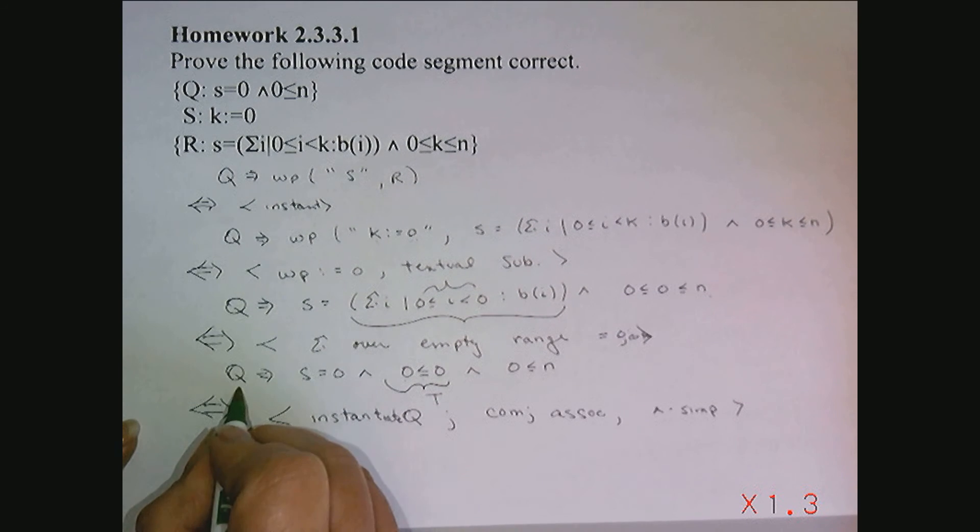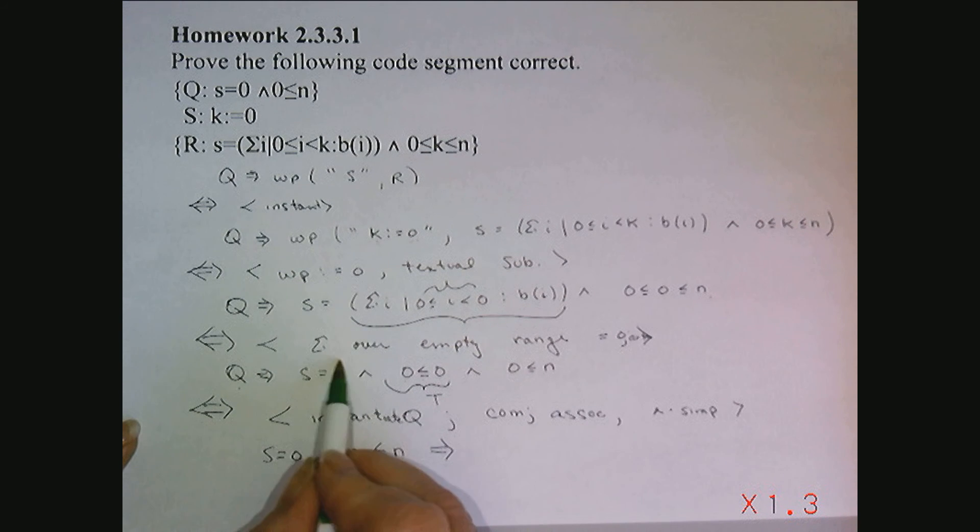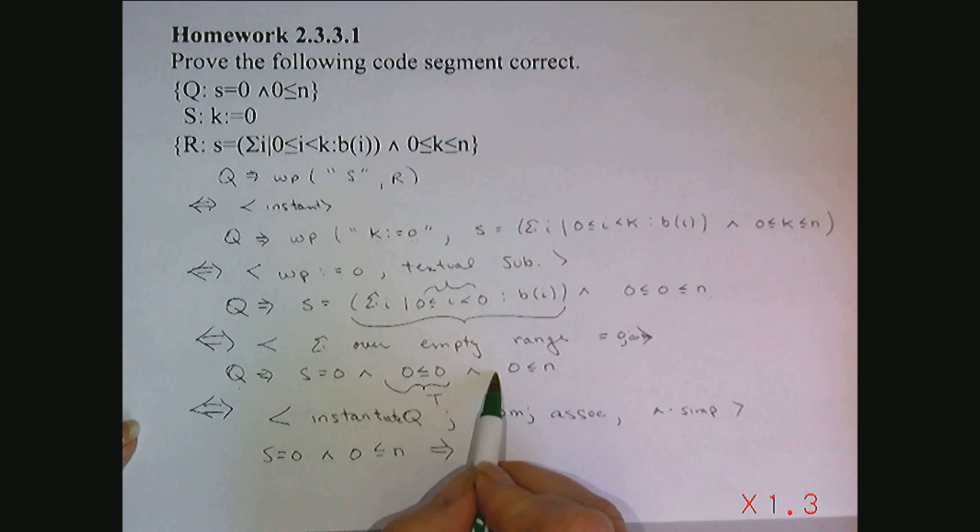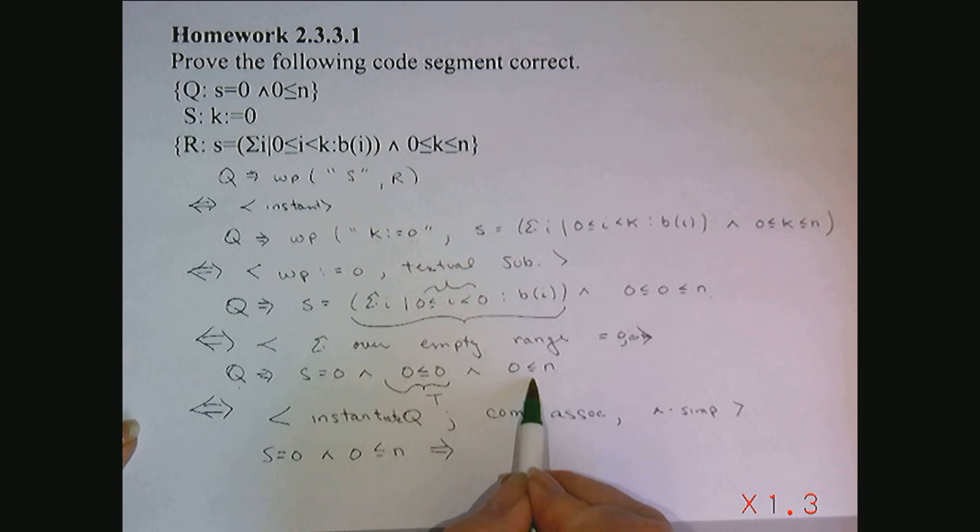And I will notice that Q, which is S is equal to 0, and 0 is less than or equal to N, implies, well, by regrouping, I can have S is equal to 0, and 0 is less than or equal to N, and true.